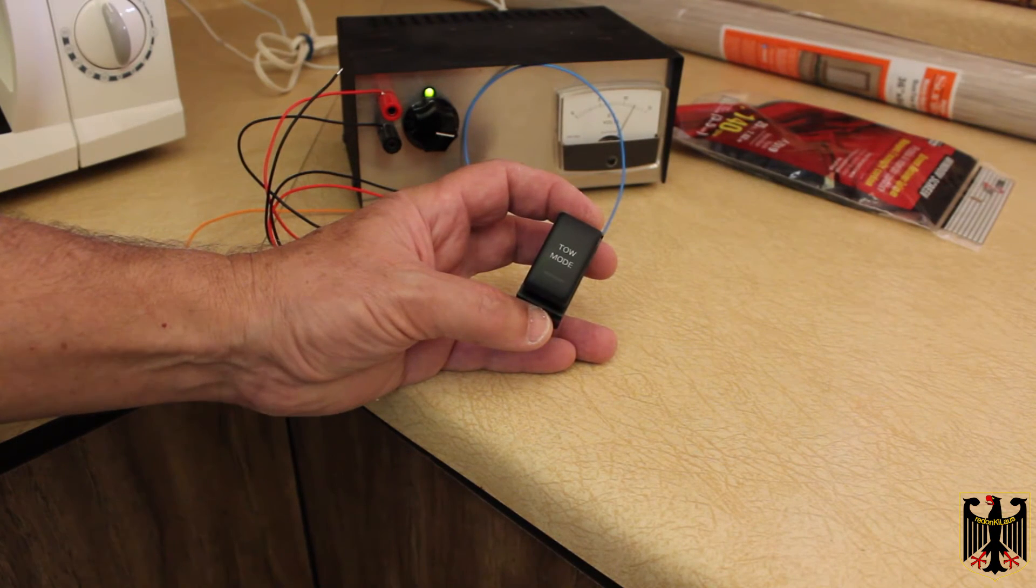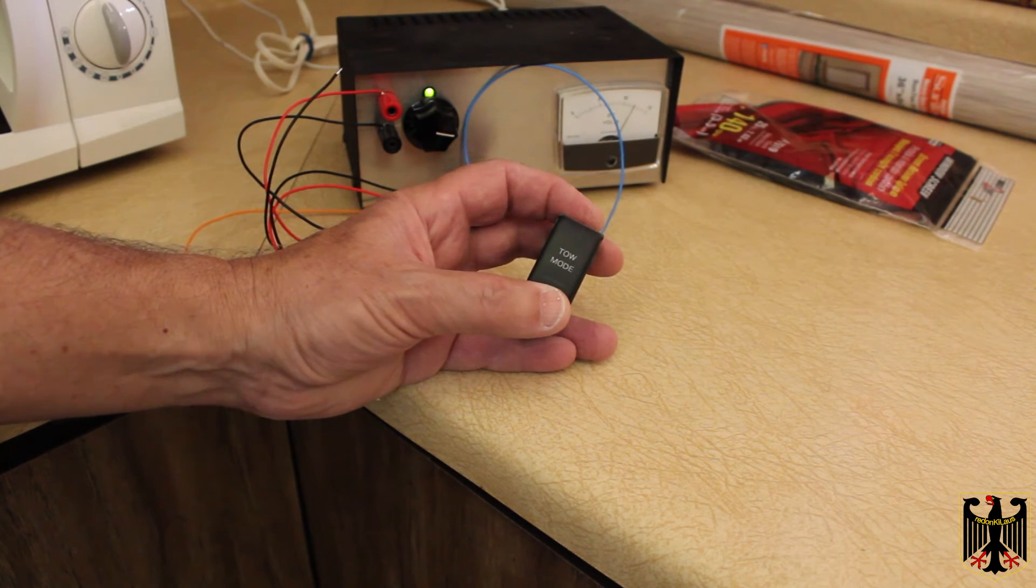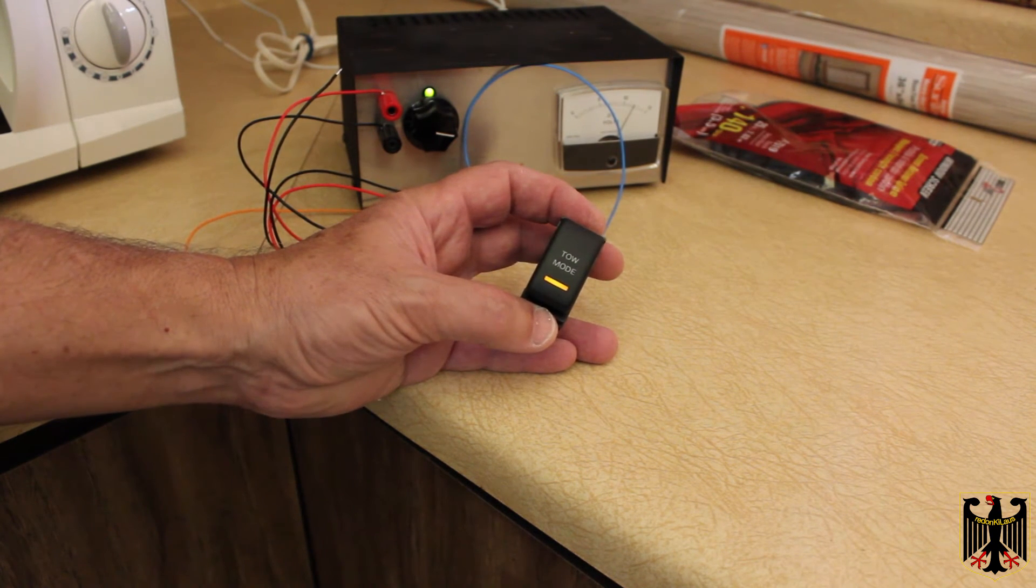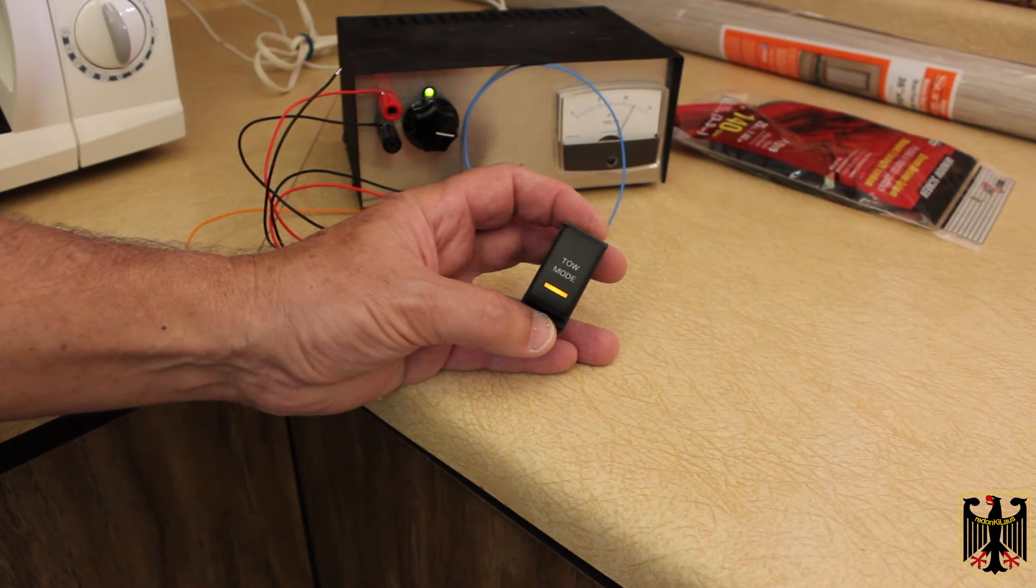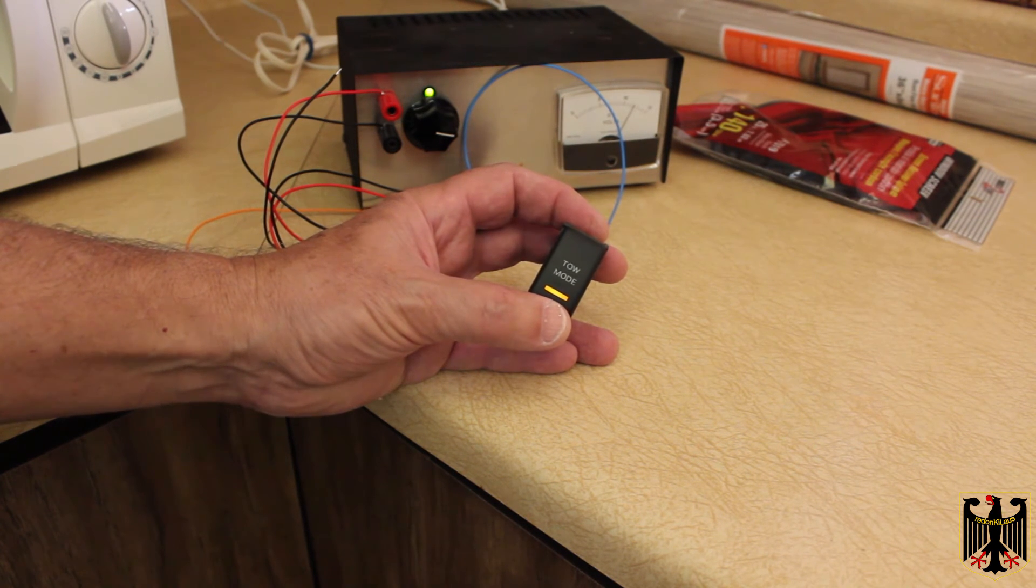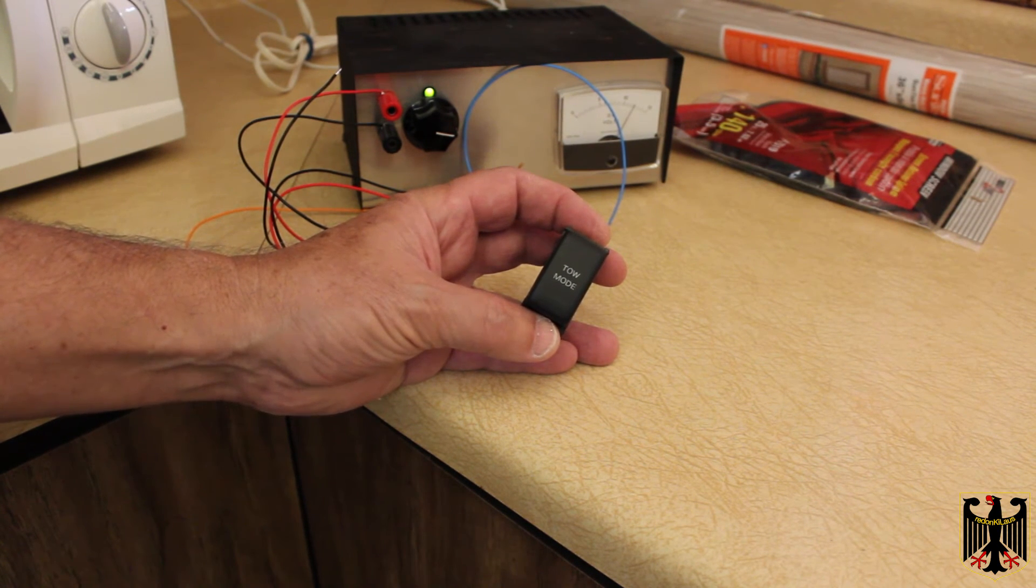I've completed building my circuit. I have my 12 volt supply hooked up and if I push this, it goes to tow mode which gives me a ground and that ground will change the Stillen from MAP A to MAP B. And then when I want to go back to MAP A I just simply push that and I get either a high or essentially nothing there, so it won't ground that wire when the tow mode is off.